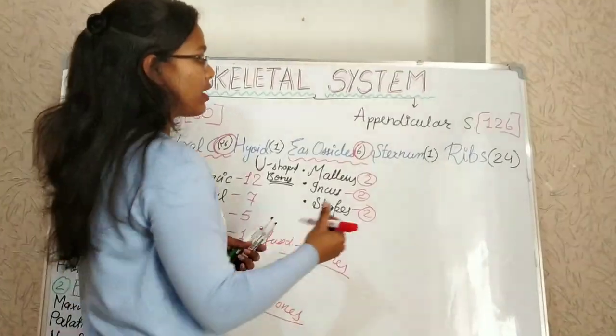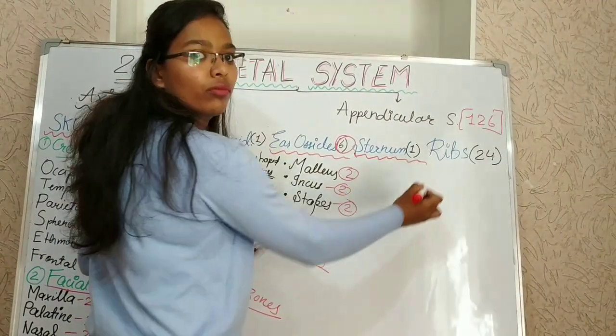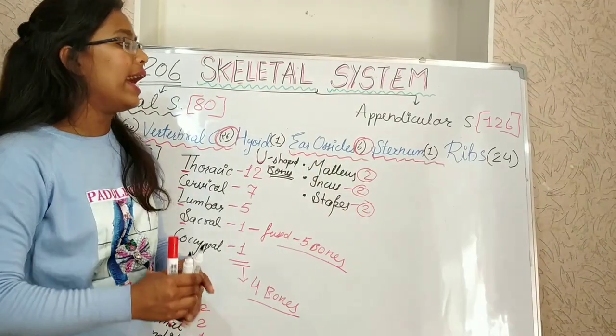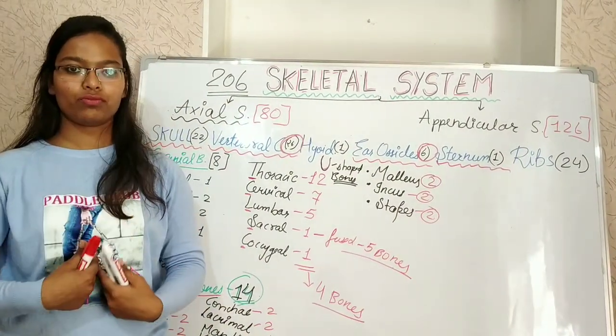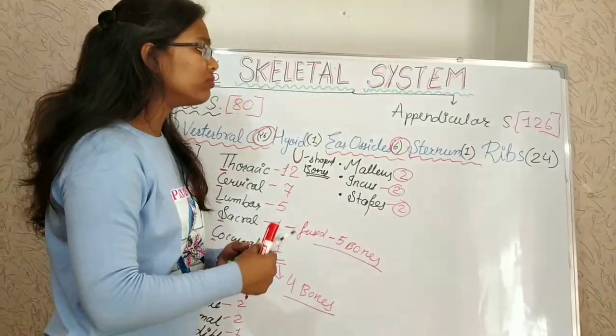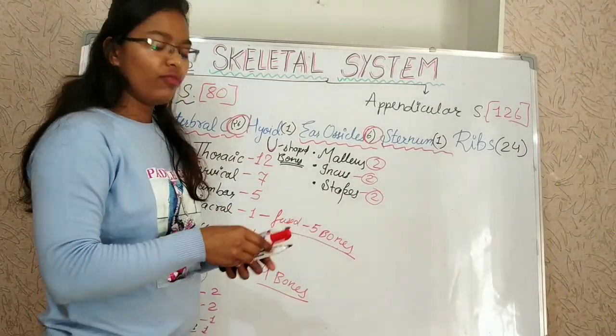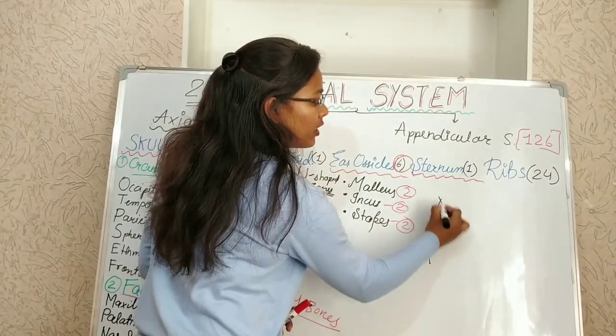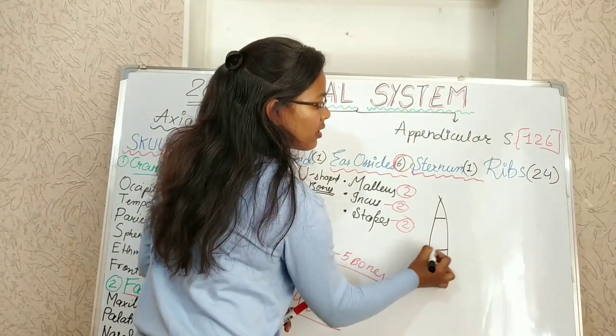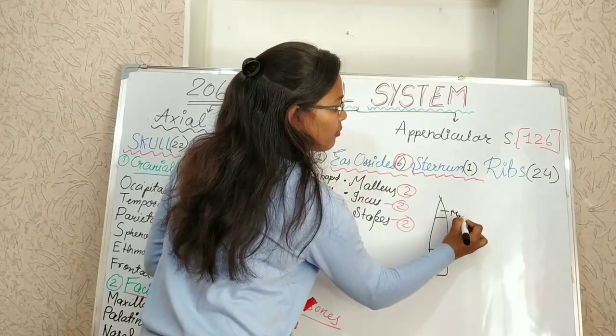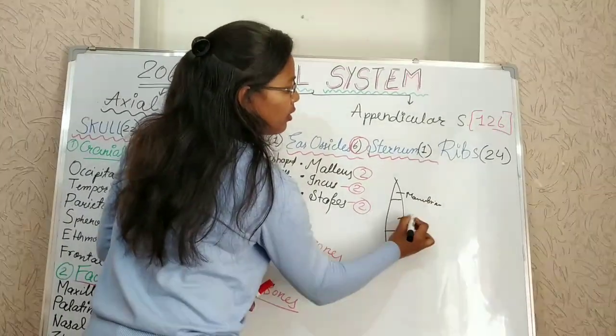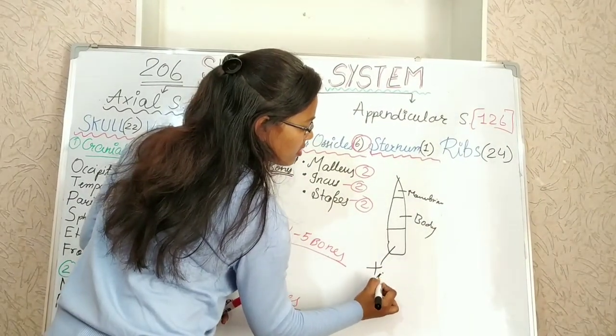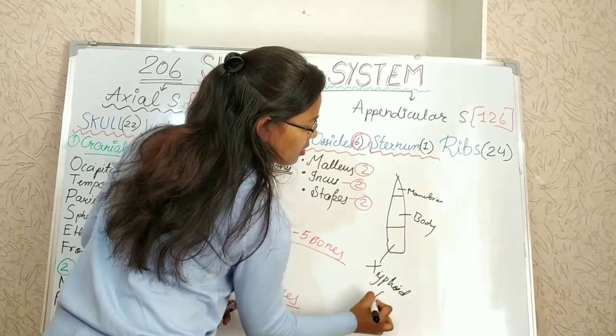Then sternum. Sternum it is one, and it is located here center. It is flat bone which consists of three parts: manubrium, body, and the xiphoid process.